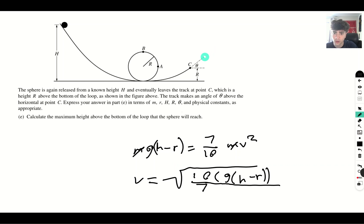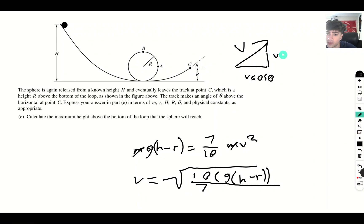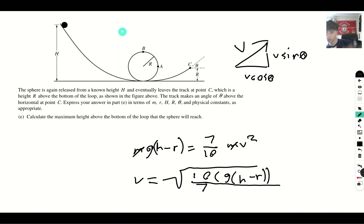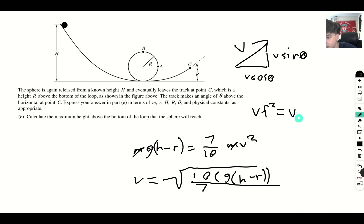From point C, the velocity has components: v cos theta (horizontal) and v sin theta (vertical, which is what we need for finding max height). At the highest point, the vertical velocity equals zero. Since we don't have time and are solving for distance, we use v_f squared equals v_i squared plus 2ad.